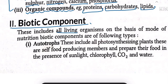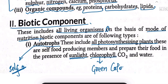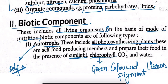The second component is biotic — all living organisms. On the basis of mode of nutrition, biotic components include autotrophs. 'Auto' means self, so autotrophs prepare their own food. All photosynthetic plants prepare food themselves through photosynthesis, using sunlight, chlorophyll (a green pigment in leaves), CO2, and water.